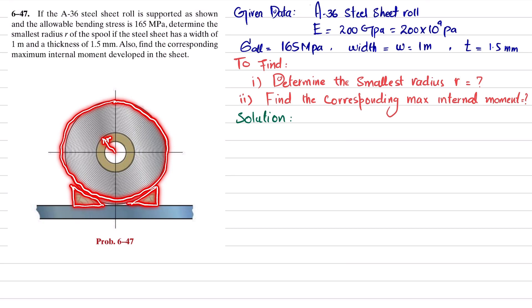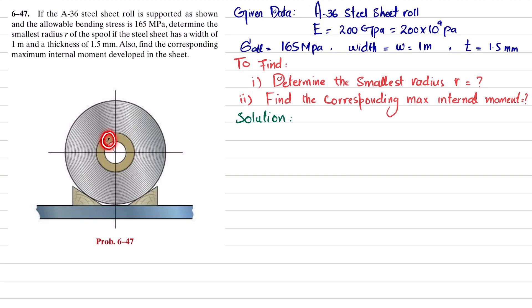The maximum bending stress is 165 megapascal. We have to determine the smallest radius r of the spool. The width of the sheet is 1 meter and thickness is 1.5 millimeter. We also need to find the corresponding internal moment M. For A36 steel, the modulus of elasticity is 200 gigapascal, taken from Appendix C of the book.